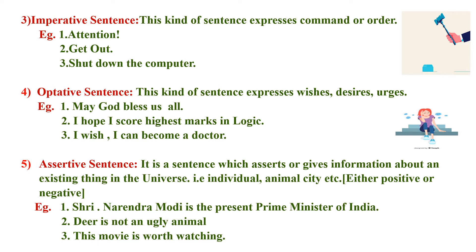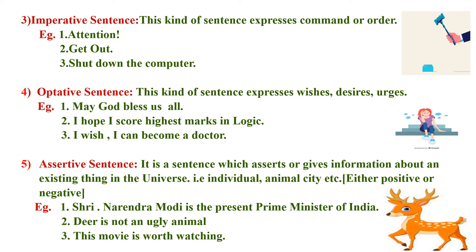The fifth type is the assertive sentence. It is a sentence which asserts or gives information about an existing thing in the universe — an individual, an animal, a city, etc. It may be either positive or negative. For example: 'Narendra Modi is the present Prime Minister of India,' 'The deer is not an ugly animal,' and 'This movie is worth watching.'